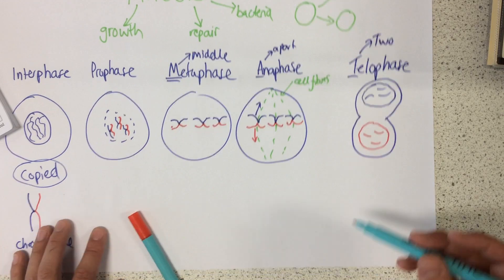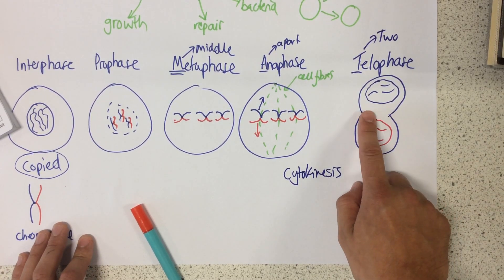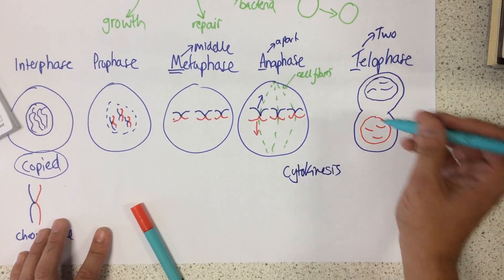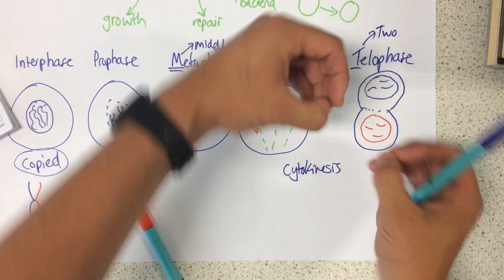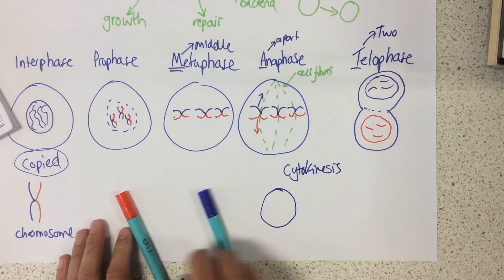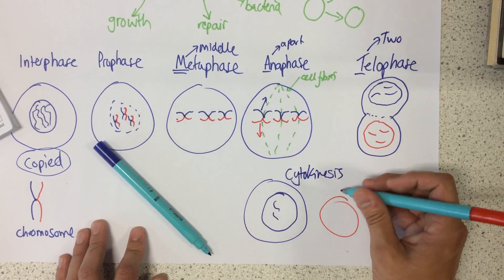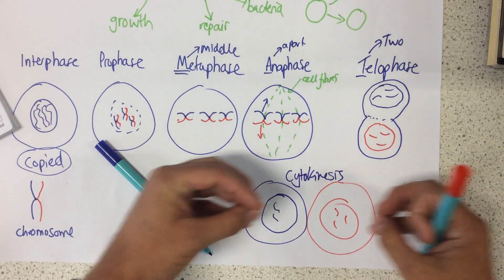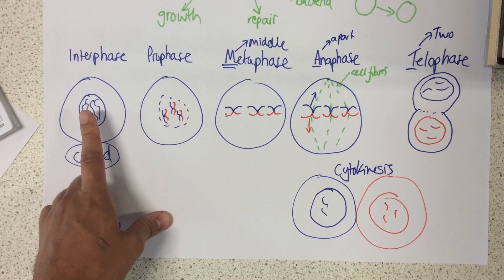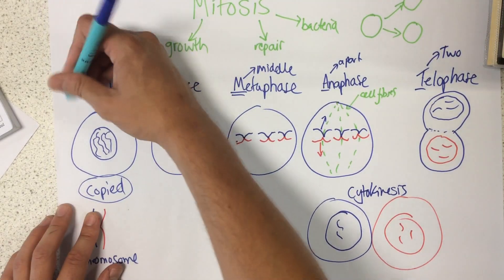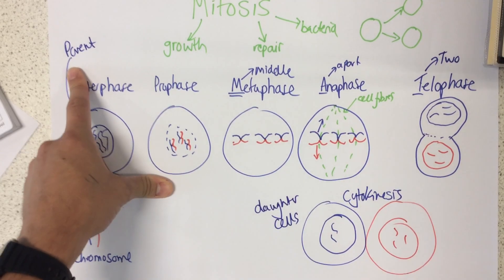The final stage is called cytokinesis. All that this is, is where the new cell membrane starts to actually form, and eventually these two cells are going to pinch off from each other and they're no longer going to be attached. So in cytokinesis, we now have one cell here and one cell here. They are no longer attached — they have come apart from each other and they should be an exact genetic copy, genetically identical to our parent cell. The original one we started with is our parent cell, and these ones we've ended up with are our daughter cells.